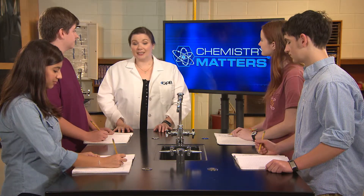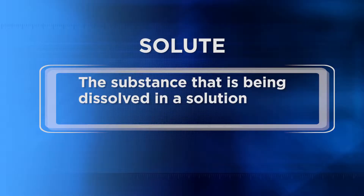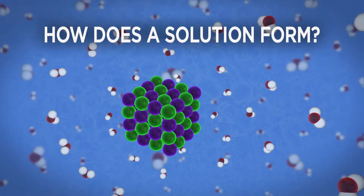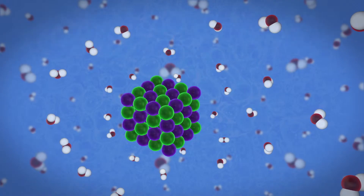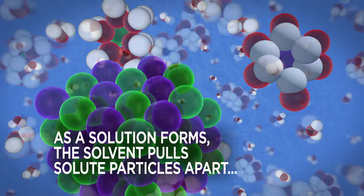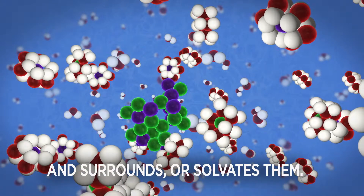Solutions are homogeneous mixtures. They can be liquids, gases, or solids, but the type we'll primarily focus on are liquid solutions. In liquid solutions, one or more substances are dissolving into another. The substance being dissolved is referred to as the solute, and the substance present in the greater amount is known as the solvent — the solvent is the substance actually doing the dissolving. First, the solute particles are surrounded by the solvent particles, then the solute particles are separated and carried out into the solution.